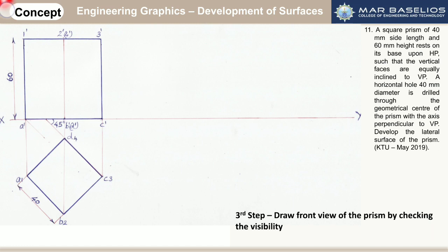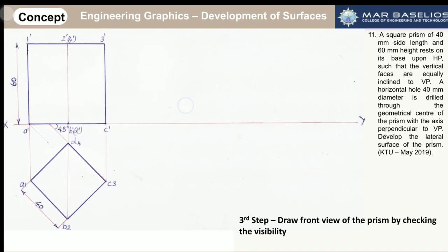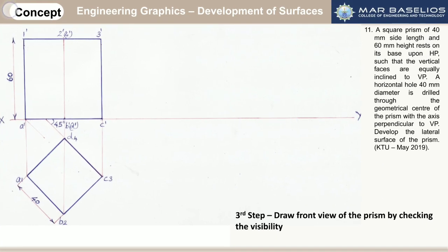The development of any prism, whatever be the prism, will be a rectangle. Here, since it is a square prism, we will be getting four different rectangles. Each has a width of 40 mm. The reason for 40 mm is that the length of the base edge is 40 mm, so the width of each rectangular face should also be 40 mm.